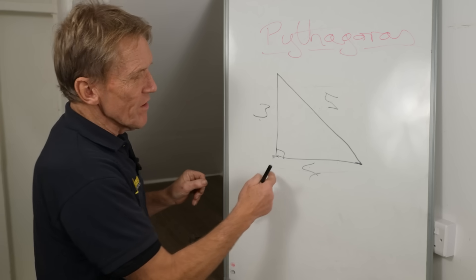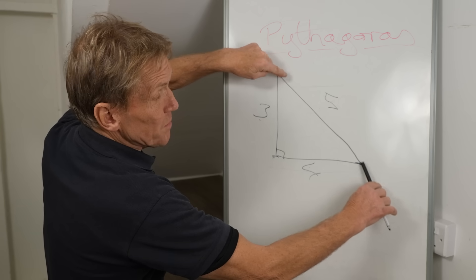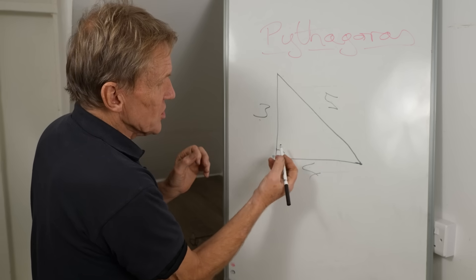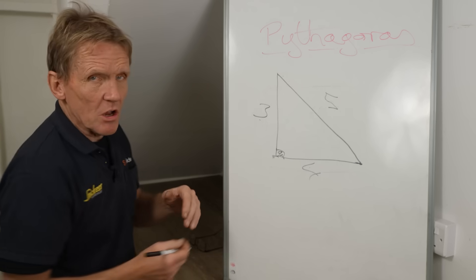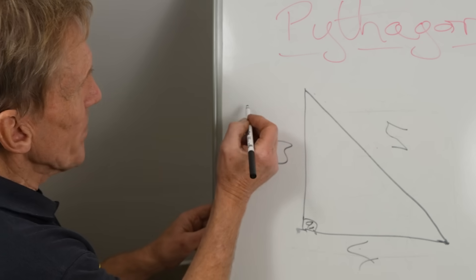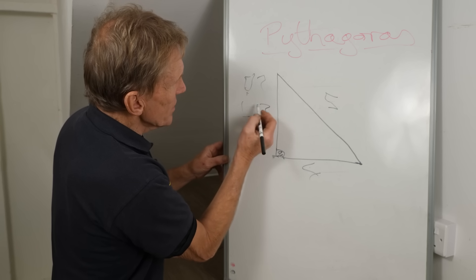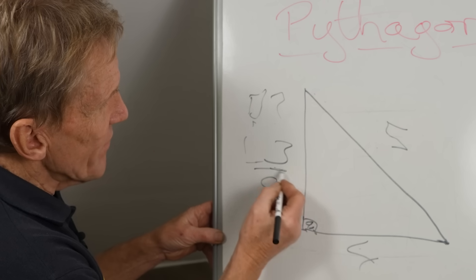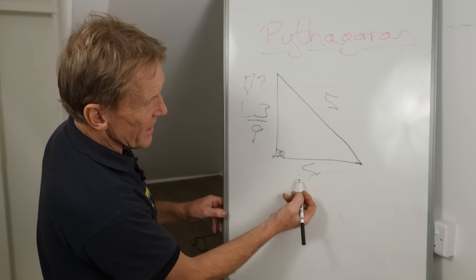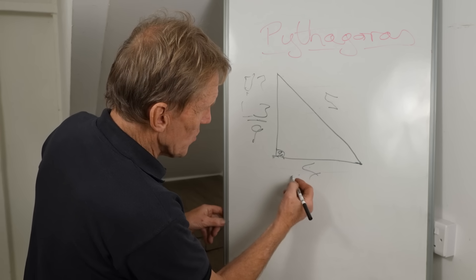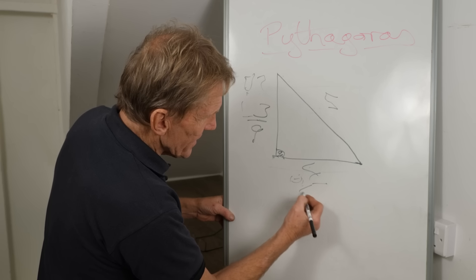You know, on a right angle triangle, if this side is three, if that side is four, then that side will always be five. We use that all the time to find our 90 degrees. So the square of this side would be three times three, which is nine. The square of that side, four times four, would be sixteen.